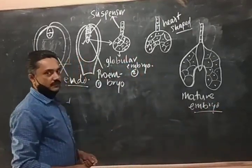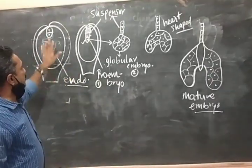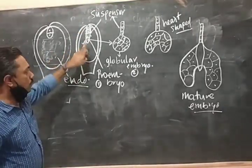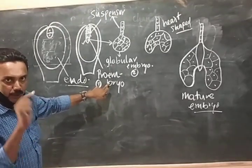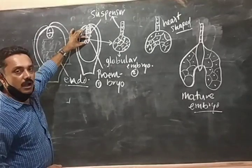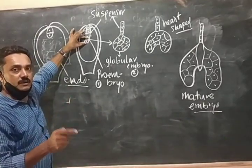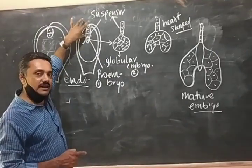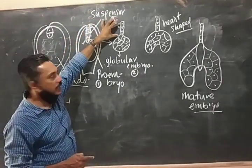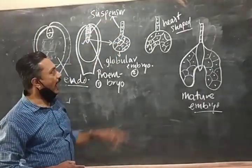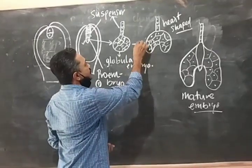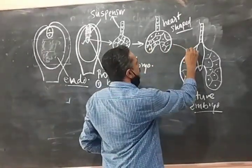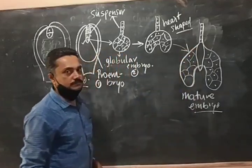There are four stages of embryo development. The zygote divides by a transverse cross wall into a chain of cells called the proembryo — that is the first stage. The tip cell divides in different manners by mitosis and develops into a globular embryo — the second stage. The basal cells act as the suspensor and push the embryo into the endosperm. Then it changes into the heart-shaped embryo — the third stage.